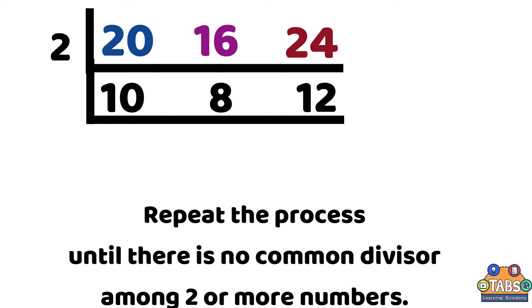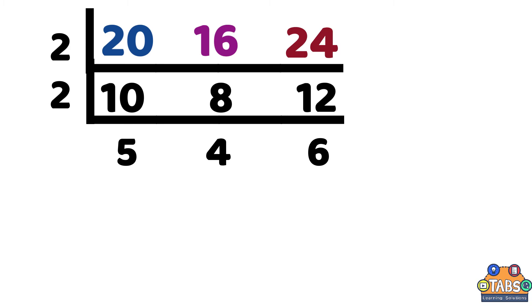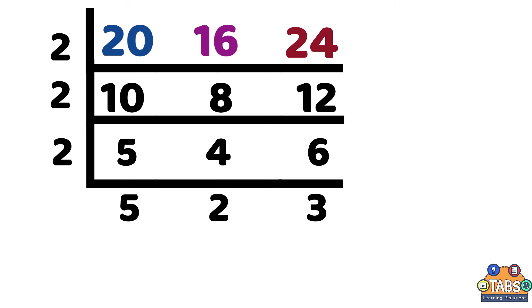Repeat the process until there is no common divisor among two or more numbers. For numbers that cannot be divided by divisor, we would just bring down the number. In this case, since 5 is not divisible by 2, we would just bring down 5.